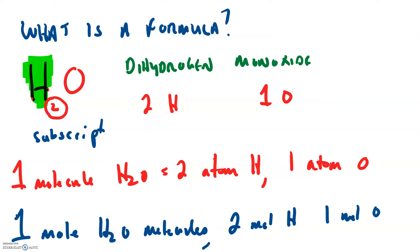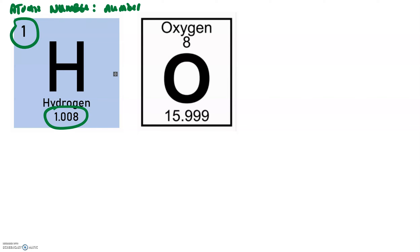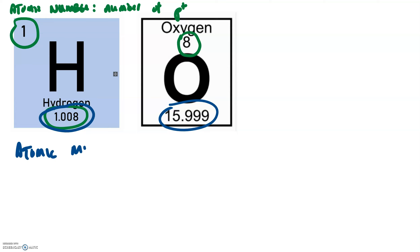What we're going to be looking at today is something called molar mass. Looking at our periodic table, every element has two numbers. The first number is called the atomic number — simply the number of protons an element has. So hydrogen has one and oxygen has eight. Each element also has a second number, what we call the atomic mass.